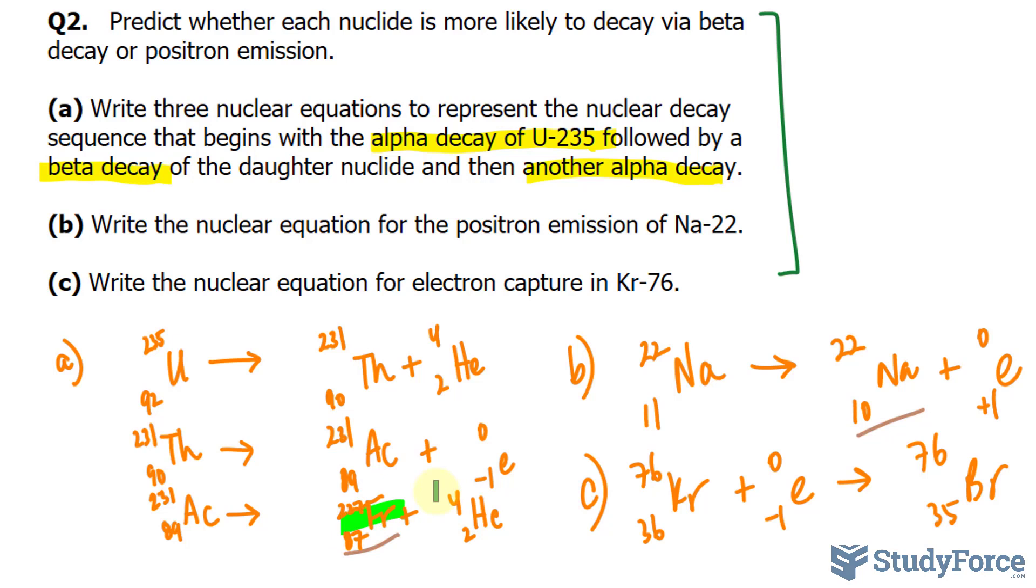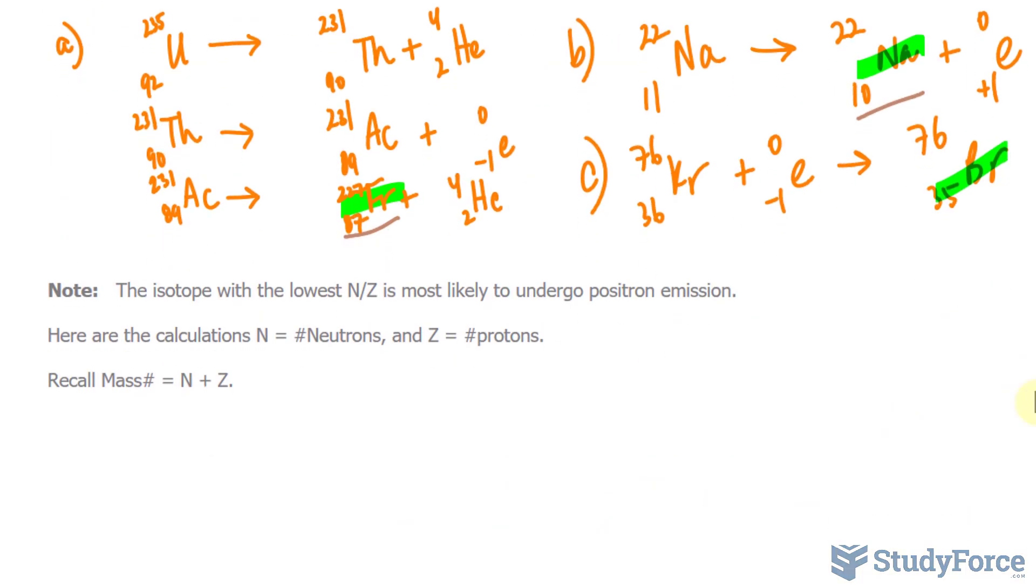Which is more likely to undergo beta decay or positron emission? You want to remember the following: the isotope with the lowest neutron to proton ratio is most likely to undergo positron emission.